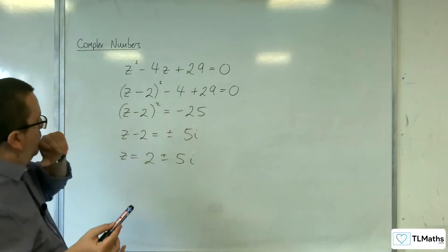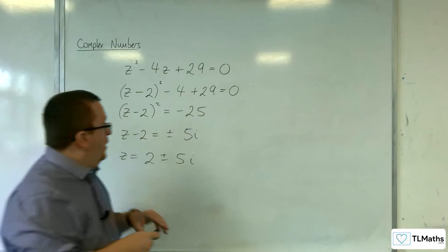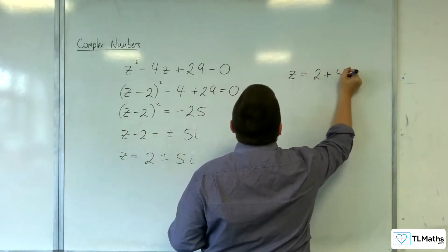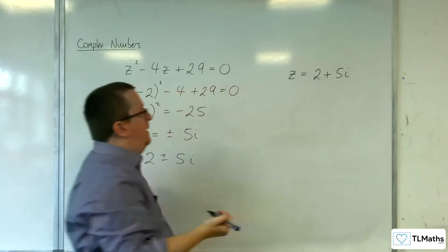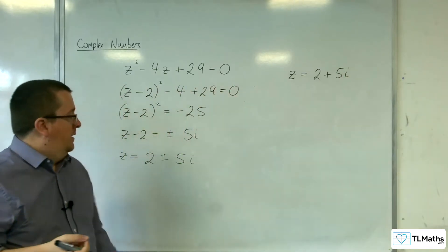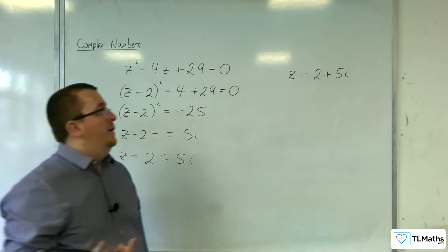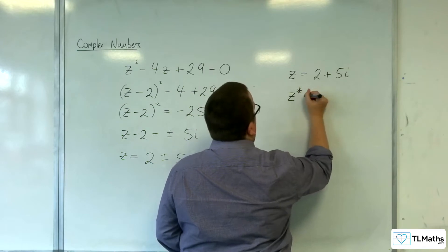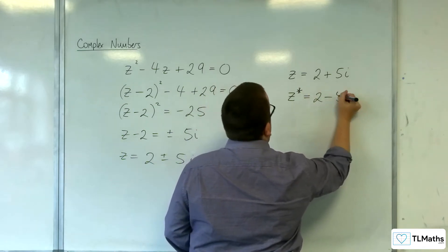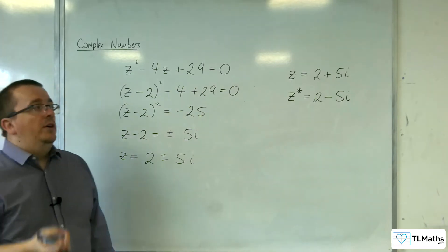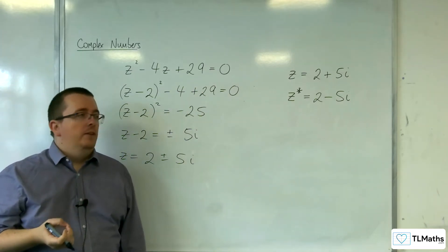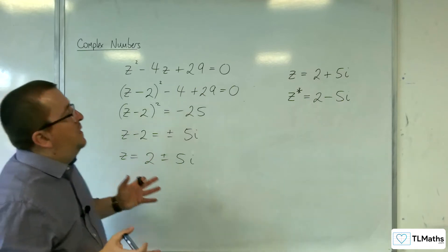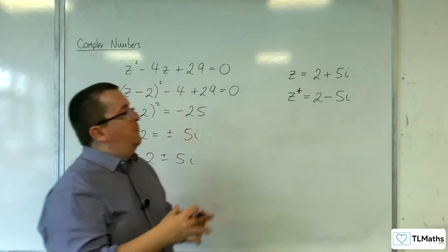What we say is that one of our roots to this quadratic equation is 2 + 5i. The other solution, 2 - 5i, we refer to as the complex conjugate of 2 + 5i. And we give it its own little label, z*. So it's like z to the power of the star, if you like, but it obviously doesn't mean that. z* is used to represent the complex conjugate.